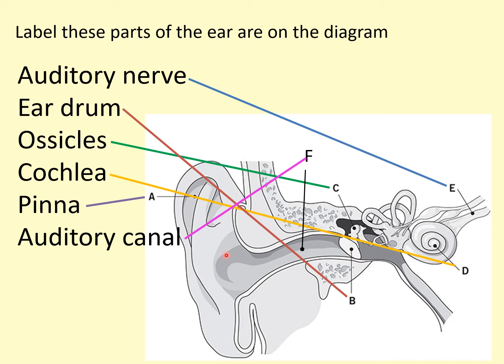The sound wave travels as vibration down the auditory canal and it causes the eardrum to vibrate. If you've ever done drumming with a very large drum, with a very big skin, with a loud noise in that room you can actually see the skin vibrating. Or maybe somebody in your house slams the door and it makes the windows rattle — same kind of thing.